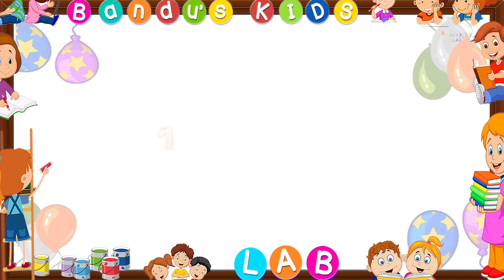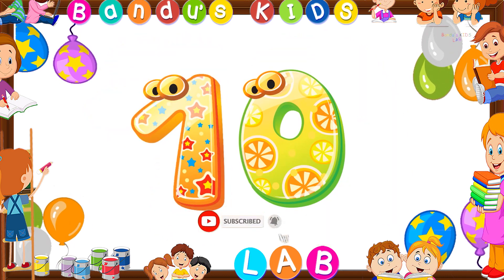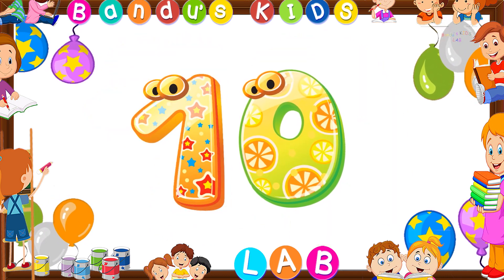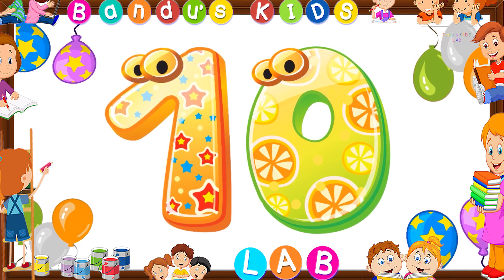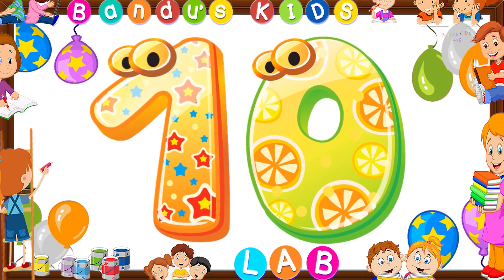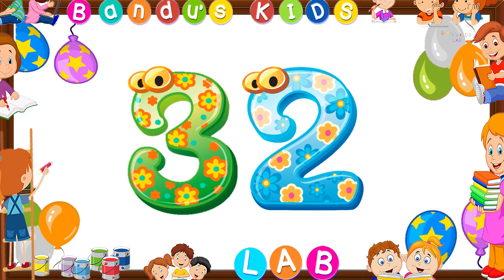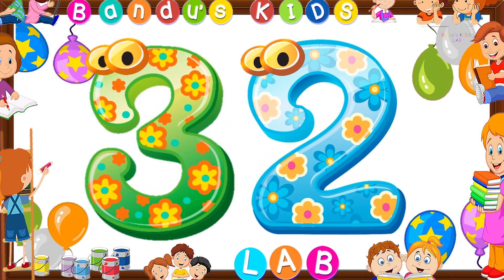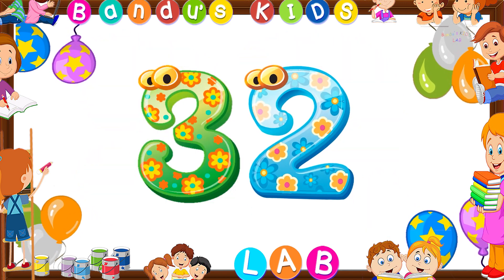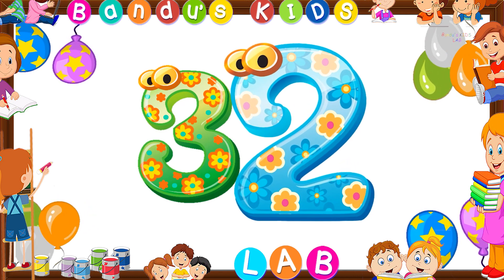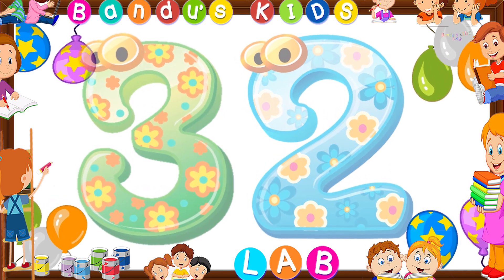Now let's see some examples of even numbers. Number 10. Is number 10 an even number? Yes, it is, because it is ended with 0 and 0 is an even number, so the number 10 is also an even number. Let's check another example. Number 32. Is 32 an even number? Yes, it is, because it is ended with 2 and 2 is an even number. That's why the number 32 is an even number.